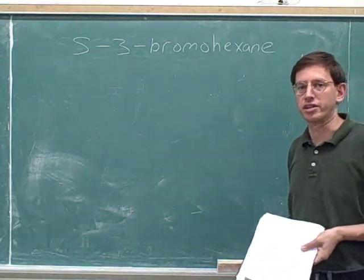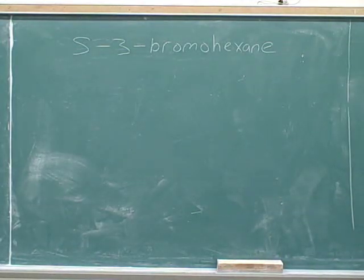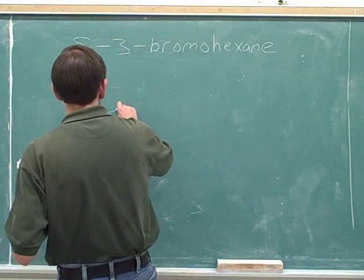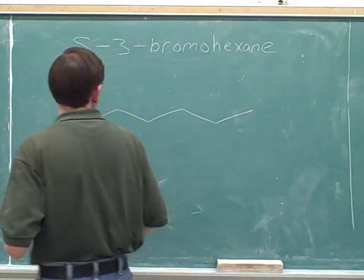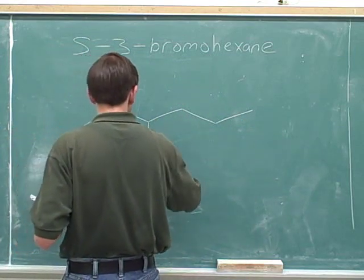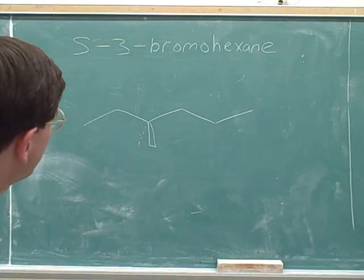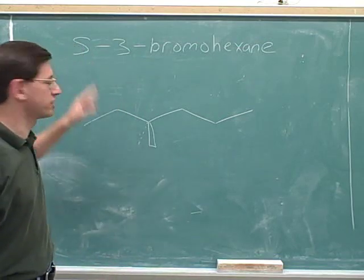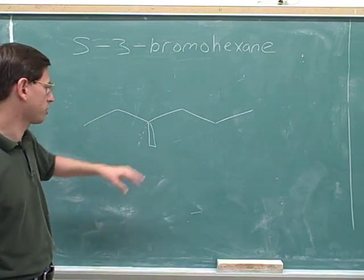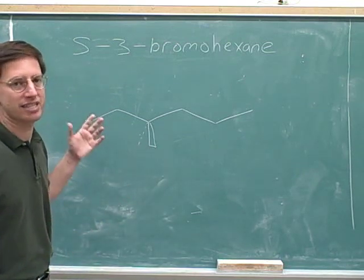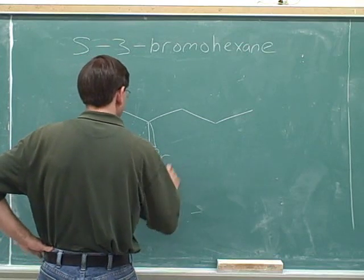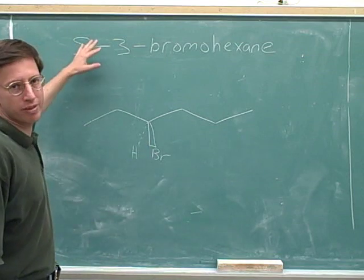Try to draw this molecule — make sure you draw the stereocenter correctly. We have to draw hexane: one, two, three, four, five, six. Here's the number three carbon. Now, what are we going to put on the dash and the wedge? We have to put in a bromine and a hydrogen. We don't know where to put the bromine and hydrogen to get an S, so we're not going to try to figure it out in our heads — we're just going to take a guess. The easiest guess is that the hydrogen should be on the dash, so we'll put the bromine on the wedge.